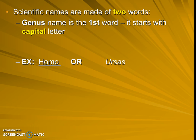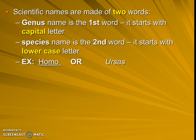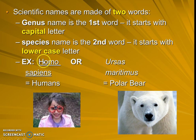Here's another example: humans are called Homo sapiens. Homo — the H — is always capitalized. The second word is the species name, and it's going to be lowercase. So for humans, sapiens in Homo sapiens has to be lowercase.